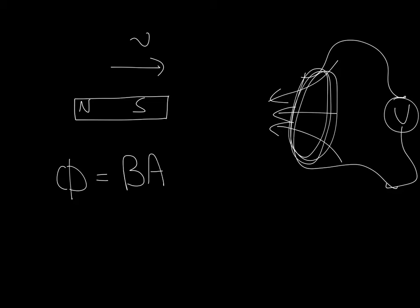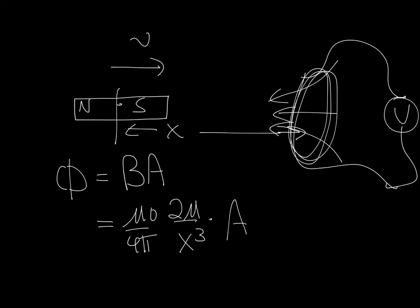Now the magnetic field strength from a dipole is going to be mu 0 over 4 pi, and then it's going to be twice mu over x cubed, where x is the distance between the magnet and the coil. And I've got to multiply that by the area of the coil. That's going to be the flux.